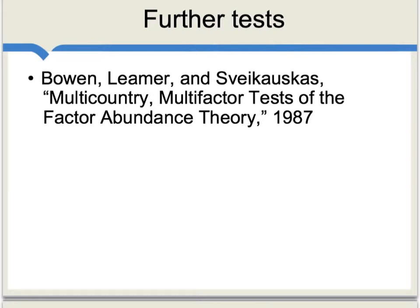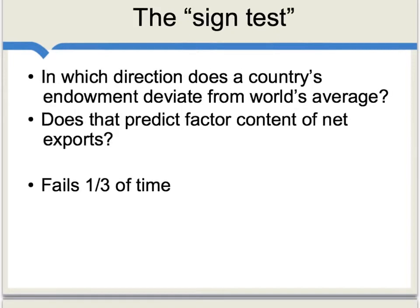Another important test, again with largely negative results, came in a famous paper by Bowen, Leamer, and Zweimüller, published in 1987. They developed what is called the sign test. To do the sign test, you look at a country's factor endowment — say, whether a country is capital-intensive — and then ask whether the exports of that country are also capital-intensive. You're testing to see if you can find the same sign. Yet for that simple test using global data, the Heckscher-Ohlin theorem fails at least one-third of the time.